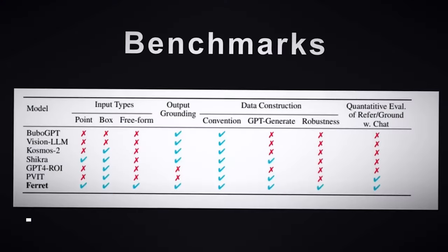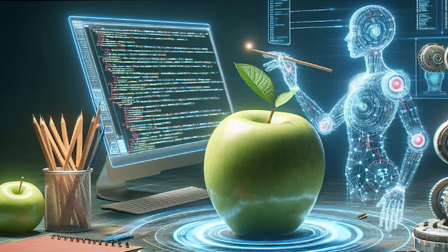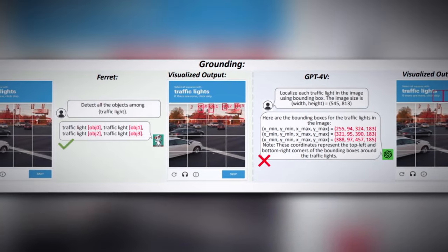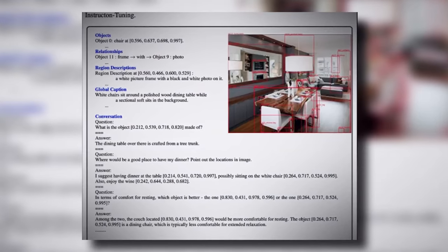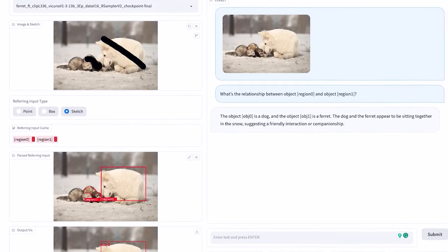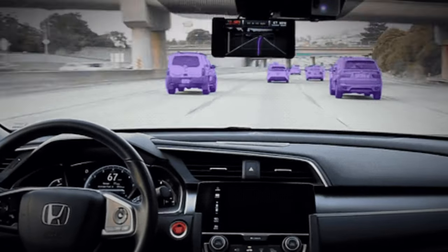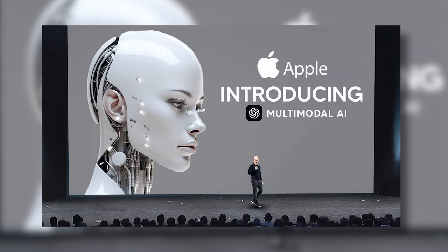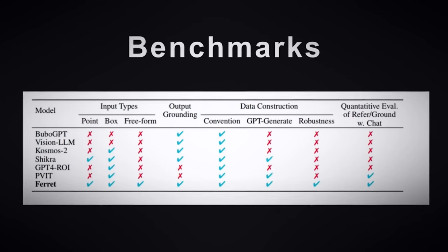Apple's Multimodal Future: Beyond the realm of benchmark victories, the implications of Apple's groundbreaking multimodal AI Ferret are far-reaching. The applications extend from elevating Siri's contextual understanding to revolutionizing tasks associated with image processing. The model's remarkable precision in pinpointing small areas holds immense promise, especially in domains like autonomous driving, where intricate image analysis is paramount. Apple's foray into multimodal AI signifies a transformative shift in how we interact with technology, promising advancements that go beyond mere benchmark performance.